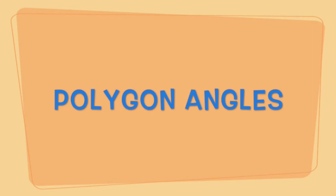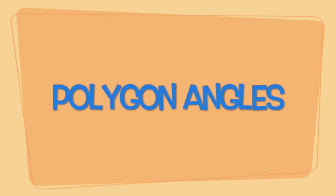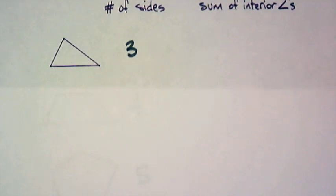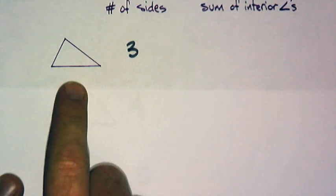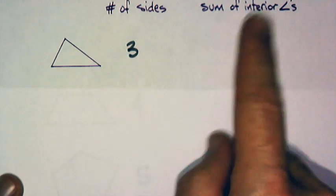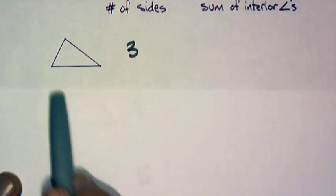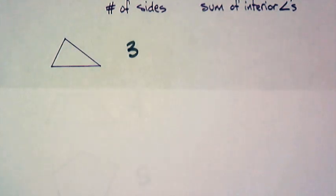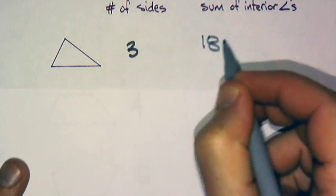Welcome back to another exciting lesson with your favorite geometry teacher. Let's get started. Tonight we are talking about polygons and polygon angles. Let's start off with one polygon that we know: a triangle. You can see that I've labeled the number of sides and the sum of the interior angles. The sum of the interior angles in a triangle is 180 degrees—that's triangle sum theory.